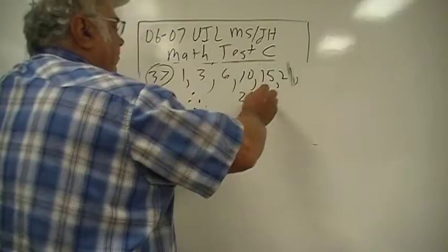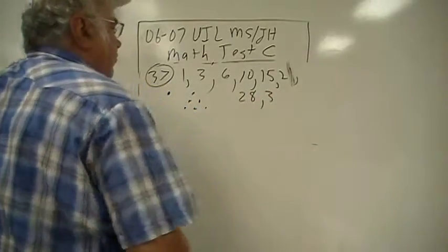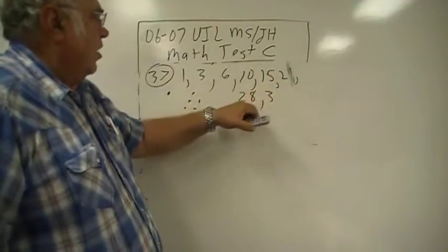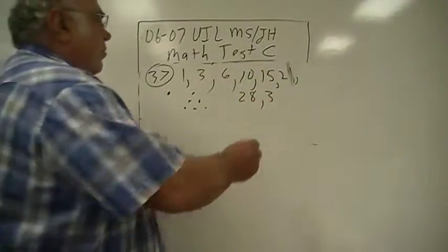And eight would be... six is twenty-one, seven to that would be twenty-eight, eight here would be thirty-six.